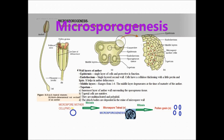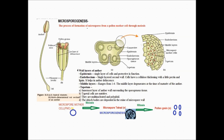Microsporogenesis is a pre-fertilization event. It is the process of formation of microspores, also called pollen or pollen grains. The formation of gametes takes place with the help of meiosis. Pollen grains or microspores are the male gametes and are haploid. Microsporogenesis is the process of formation of microspores from the pollen mother cell, or microspore mother cell, through meiosis.